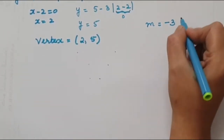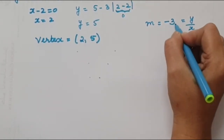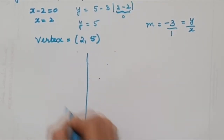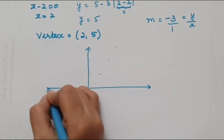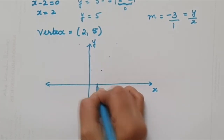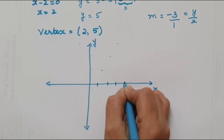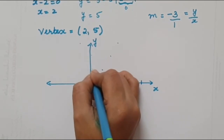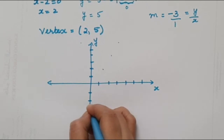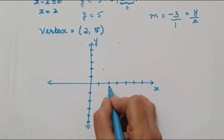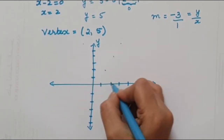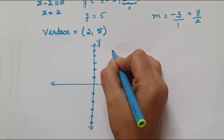The slope is -3, meaning y moves 3 blocks and x moves 1 block, but the curve opens downward. Marking the vertex at (2, 5) on the graph, from there we move 1 unit in x and 3 units downward in y to plot each point.